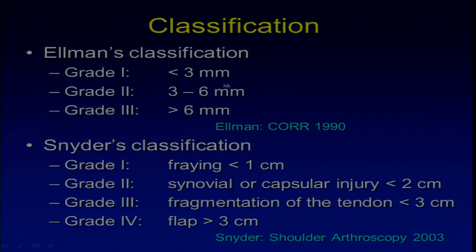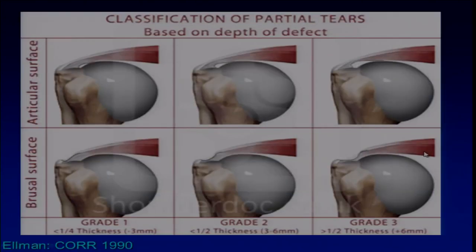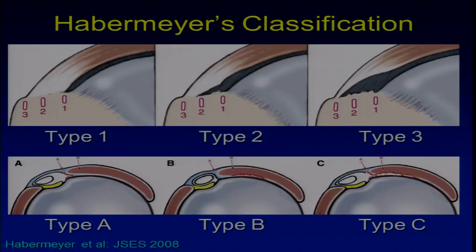Ellermann's classification: Grade one is less than three millimeters, or less than one-fourth of the thickness. Grade two is less than half. Grade three is more than half. Schneider incorporated not only the depth but also the extent of the tear into his classification. Habermeyer further classified the tear on both the coronal and sagittal planes, including injury to the biceps pulley and isolated versus combined supraspinatus tears.